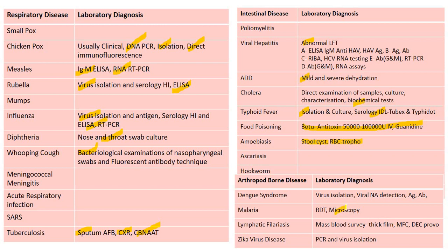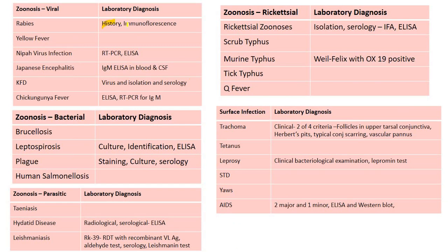Malaria: RDT and microscopy. Lymphatic filariasis: mass blood survey, thick film DC, provocation test. Zika virus: PCR and virus isolation. Rabies: based on history, clinical presentation, and immunofluorescence. Nipah virus: RT-PCR. Japanese encephalitis: IgM ELISA in blood and CSF. KFD: virus isolation and serology. Chikungunya: ELISA, RT-PCR for IgM. Leptospirosis: culture, identification, ELISA. Plague: staining, culture, and serology. Hydatid disease: radiological and serological through ELISA.